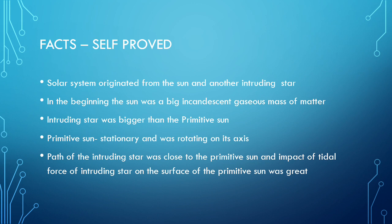This theory had self-proved facts. The solar system originated from the sun and another intruding star. In the beginning, the sun was a big incandescent gaseous mass of matter. This intruding star was bigger than the primitive sun. The primitive sun was stationary but was rotating on its axis.